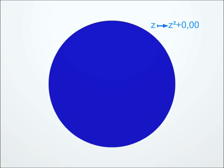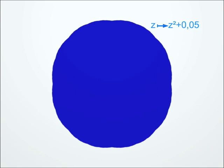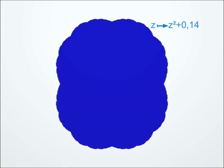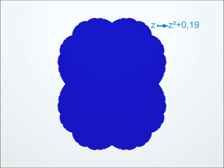But we can play the same game with other transformations, like, for instance, those of the form Z squared plus C, where C is a complex number that we can choose at will. For each complex number C, we therefore have a Julia set, whose shape changes when C changes. You can see a few examples here.